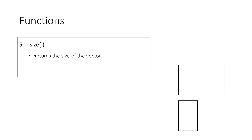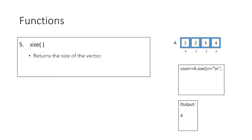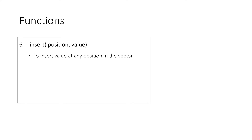Another very useful function is the size function, which returns the size of the vector. Suppose vector 'a' has 4 elements — printing its size would give us 4. Now if we add one more element, say element 7, using push_back, our vector now contains 5 elements, and the size function would return 5. That is, even if we add or delete elements dynamically, the size function will always return the number of elements the vector is currently holding. We can also use the insert function to insert a value at any position, and the erase function to delete a value at any position in the vector.